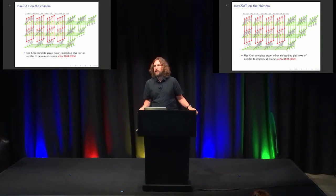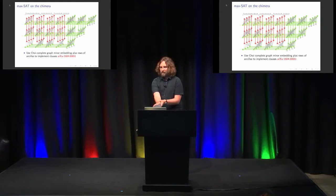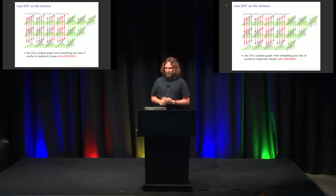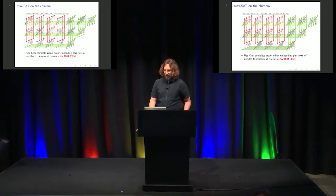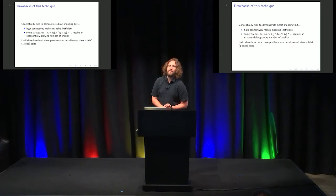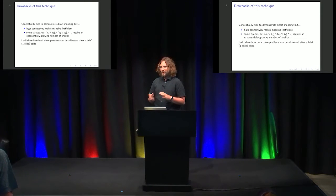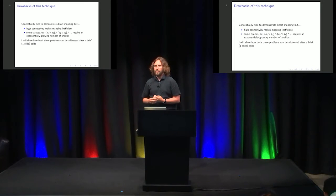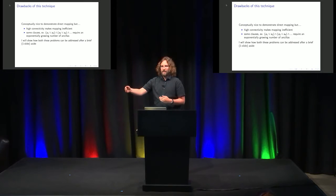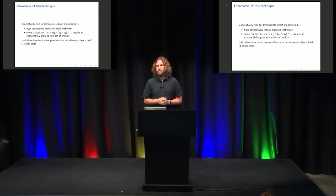One thing that you can do with this kind of gadget — which was actually the subject of our recent archive paper — is you can use the Choi minor embedding plus having some ancillas hanging off to put a MaxSAT problem on the Chimera. What I've shown here is actually an XOR SAT if you look at it carefully, but you could do the same thing with SAT. However, this has some drawbacks. First off, you need the high connectivity, which makes it relatively inefficient. Secondly, some clauses you actually can't make very efficiently this way — for example, a clause with alternating ANDs and ORs. If you try to count the number of ancillas you need for that, it grows exponentially with the number of those parenthetical terms. However, I'm going to show some new ideas on how those problems can be addressed.